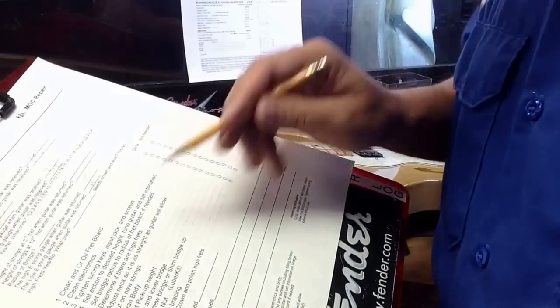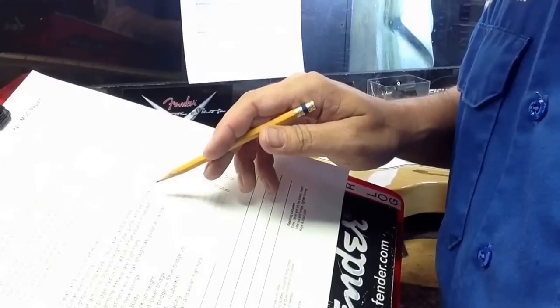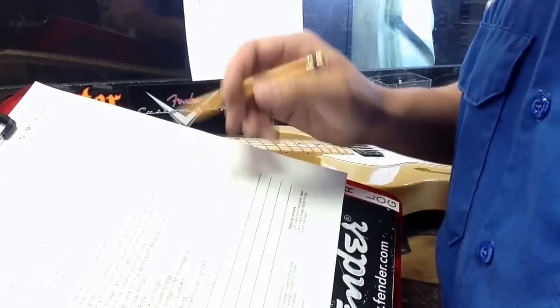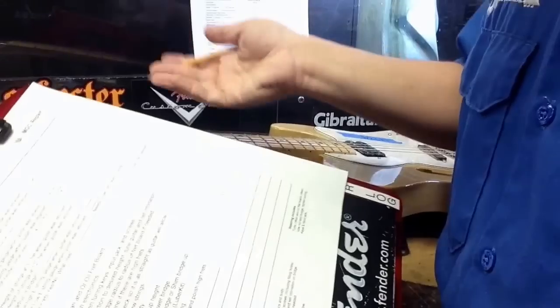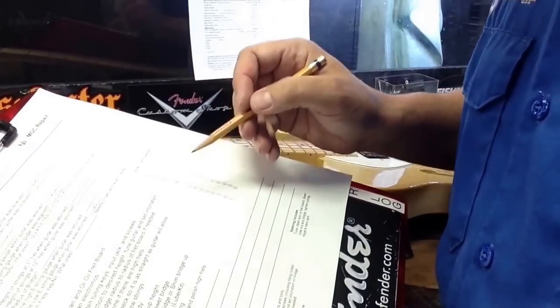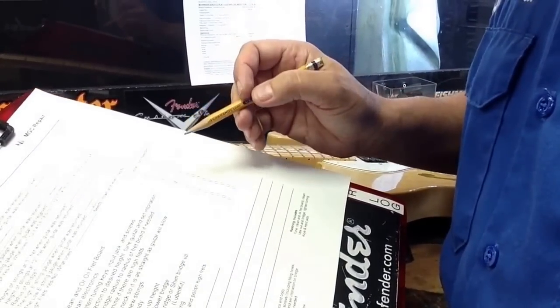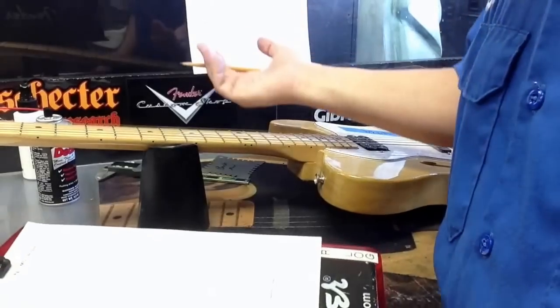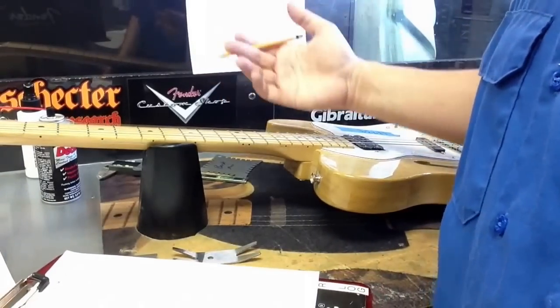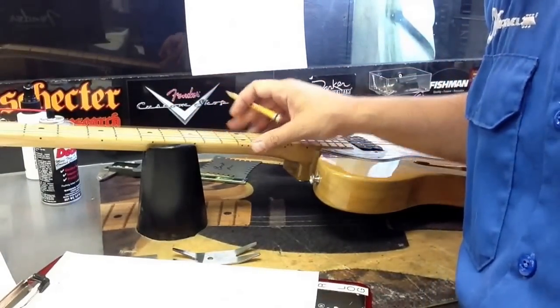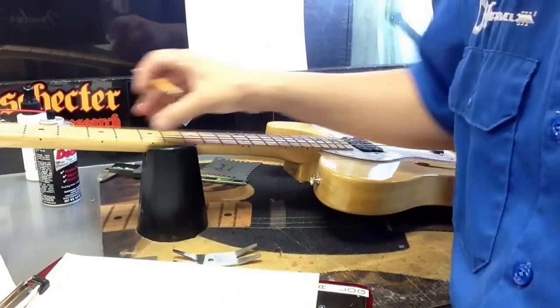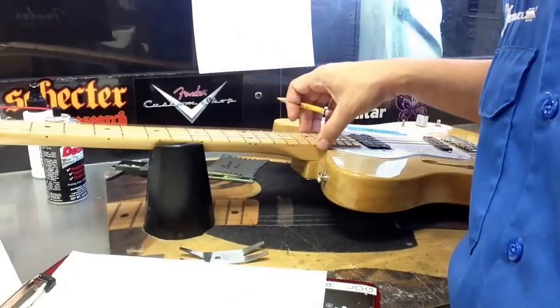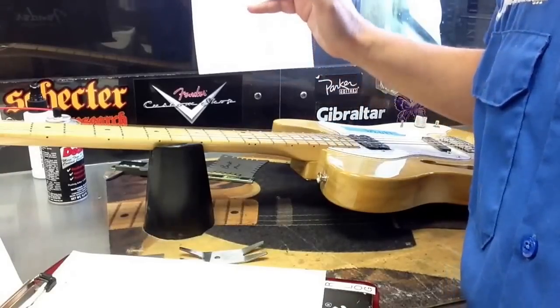Once it's done, we'll check off that we've tightened everything. Then we're going to set the action. We're going to determine if there are any high frets, which we did, or at least we will finish to do, and mark that off. Once we've done all that, in this particular case we'll take the strings off. All the frets that are high, we'll polish them down. This guitar has fret sprout, which is where the frets are sticking out of the sides, and we'll file those down using some files.